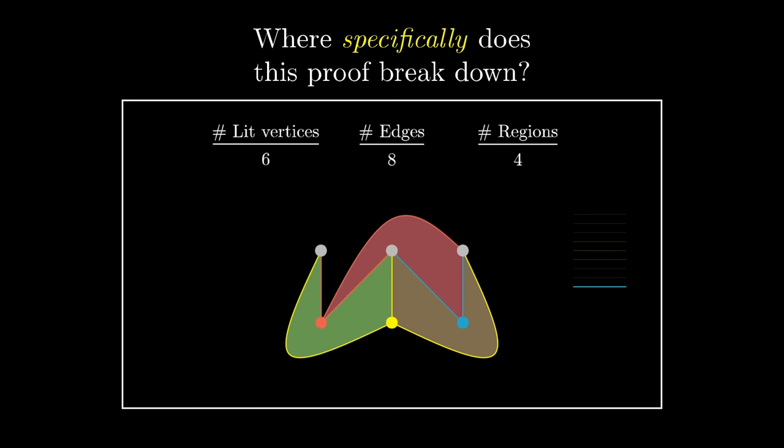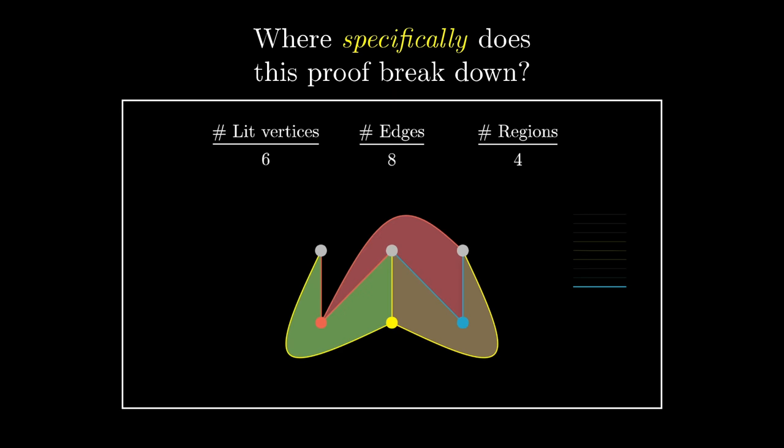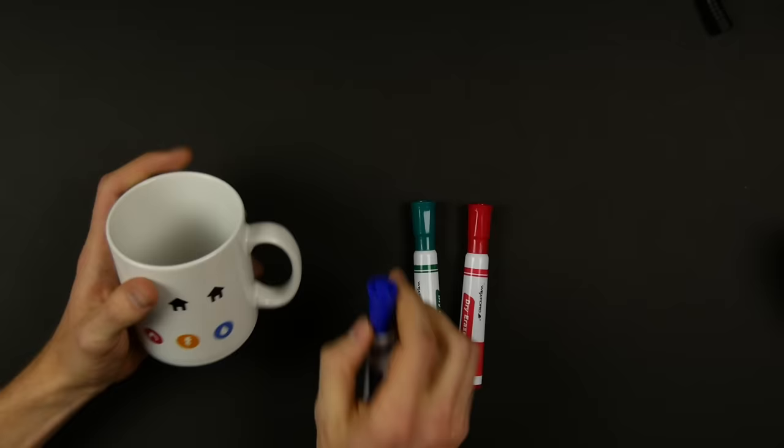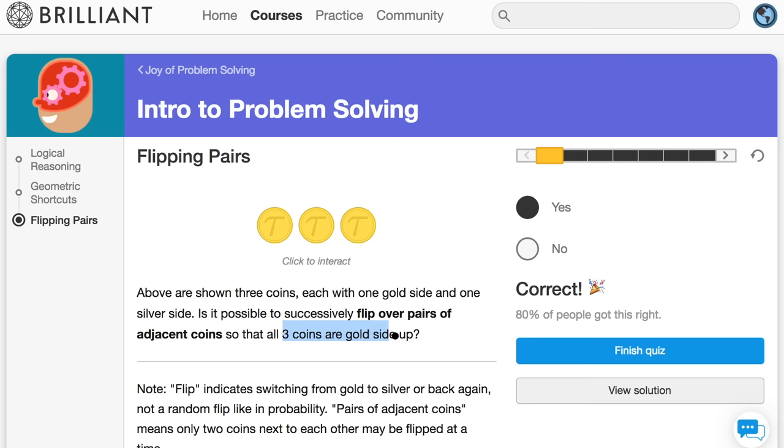But Grant, I hear you complaining, how am I supposed to practice my problem solving if I don't have someone shipping me puzzles on topologically interesting shapes? Well, let's close things off by going through a couple puzzles created by this week's mathematically oriented sponsor, Brilliant.org. So here I'm in their Intro to Problem Solving course and going through a particular sequence called Flipping Pairs. And the rules here seem to be that we can flip adjacent pairs of coins, but we can't flip them one at a time. And we are asked, is it possible to get it so that all three coins are gold-side up? Well, clearly, I just did it, so yes.